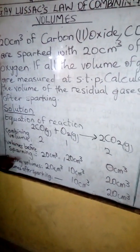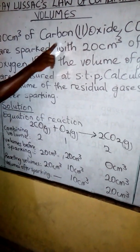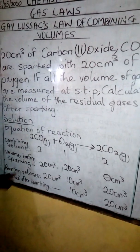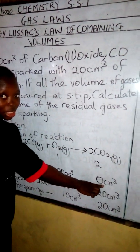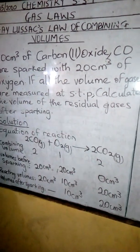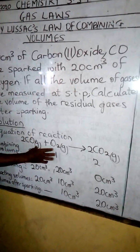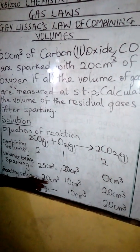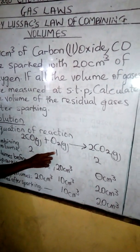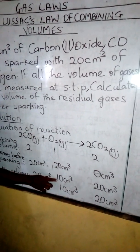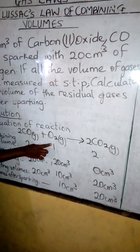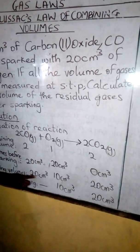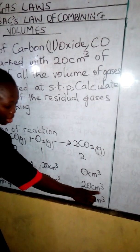Volumes before sparking: from the question, we have 20 cm³ of CO and 20 cm³ of oxygen, with zero product at this time. For the reacting volumes: when the two gases combine together to produce CO₂, from the combining volumes, 20 cm³ of CO reacts with half of 20 cm³ of oxygen, which is 10 cm³. So from the combining volumes ratio of 2:1, we have 20 cm³ CO reacting with 10 cm³ O₂, and the product formed is 20 cm³ of CO₂.